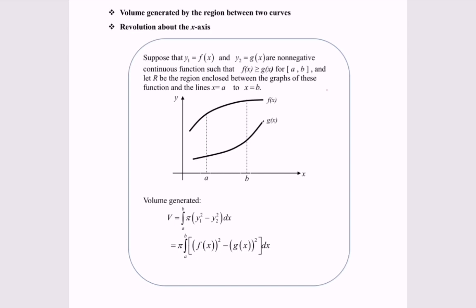Referring to the graph, we have f(x) greater than or equal to g(x) for the limit a to b, meaning here we have the region. So the formula for the volume would be: V equals π times the integral from a to b of y₁ squared minus y₂ squared with respect to x.